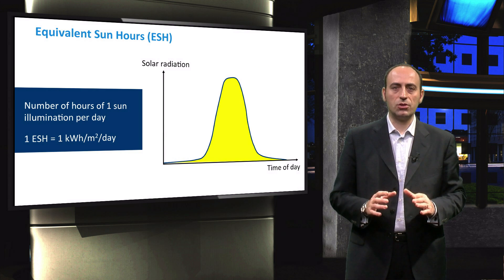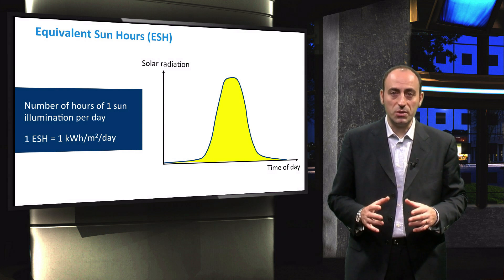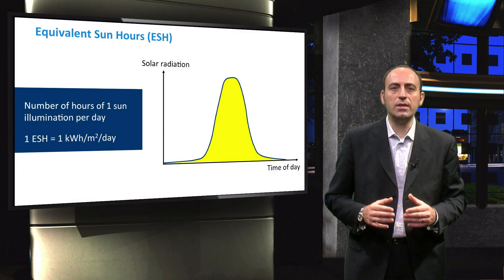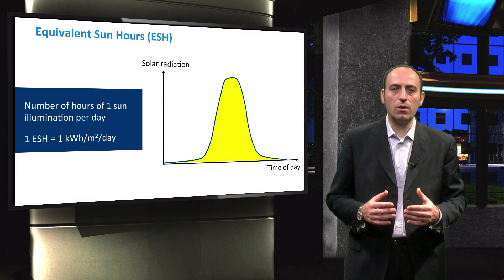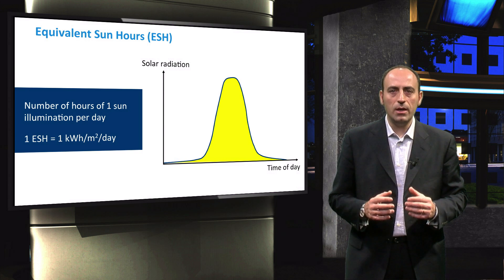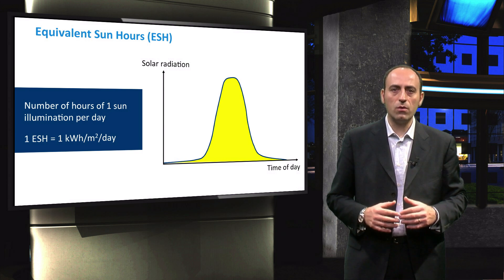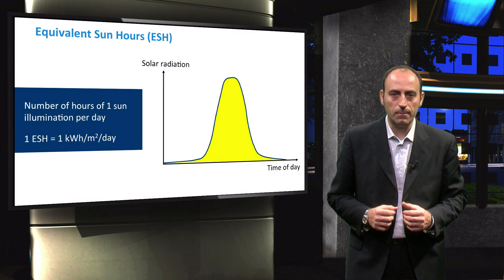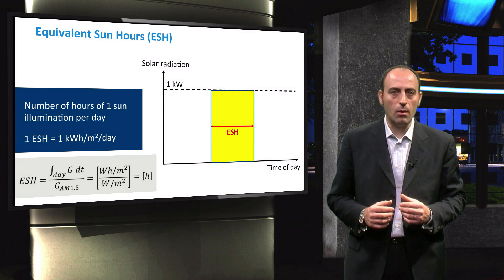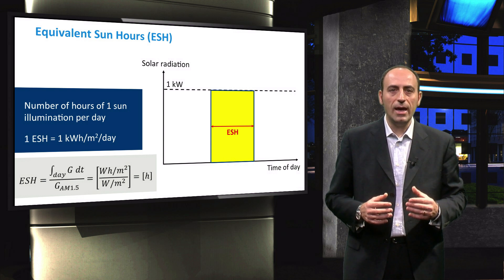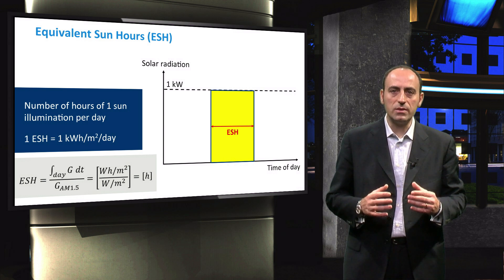One last definition to conclude this lecture: the equivalent sun hours, or ESH, also called the peak sun hour. An equivalent sun hour is specifically an hour during which the intensity of sunlight is 1000 watts per square meter. The ESH is used to measure how much solar energy is available in an area during a typical day. In the graph, we see the irradiance during one day. The area under the curve, in yellow, corresponds to the solar insolation, given in energy per unit area. To obtain the peak sun hours, the solar insolation has to be divided by the irradiance of AM1.5 — 1000 watts per square meter — and the result is the number of hours. The corresponding graph of the irradiance has a rectangular shape that covers the same area.